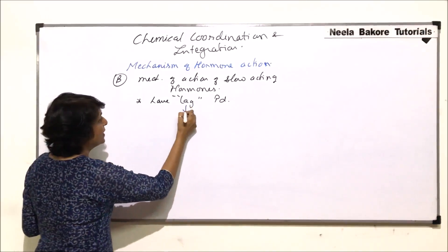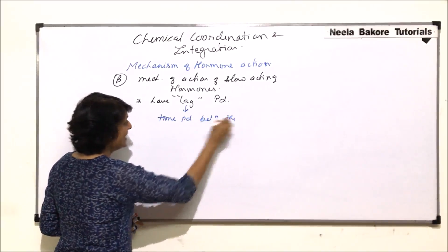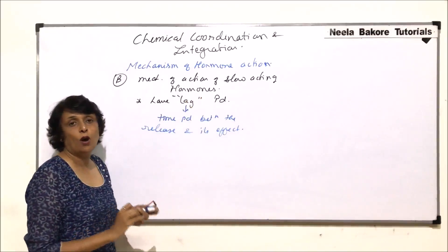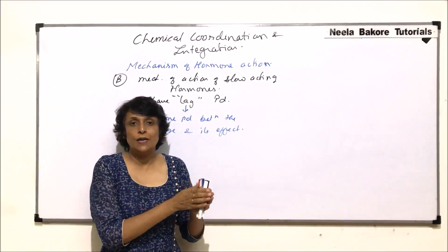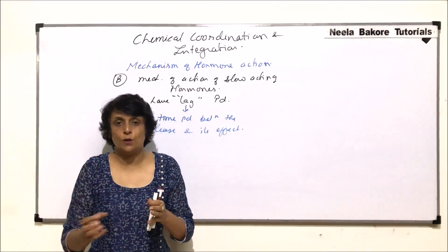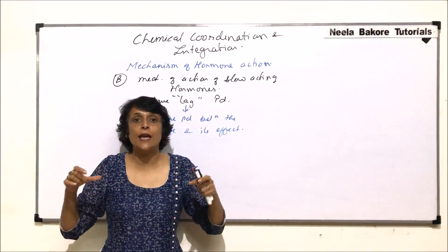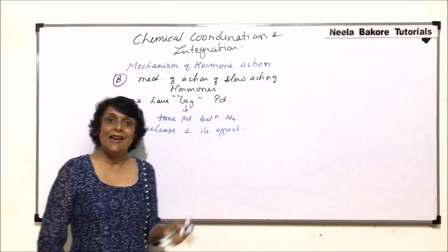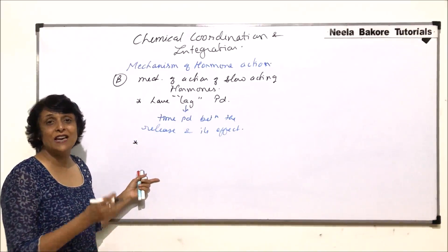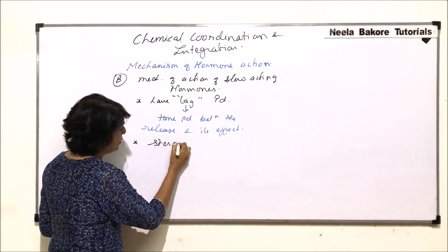The lag period basically means the time period between the release and its effect. The hormone is released from the endocrine gland, then there is a period when it is doing something, going somewhere, some reactions are taking place, and then the effect is seen. This time gap between the release and the effect is known as lag period. Examples of slow acting hormones are especially the steroid hormones.